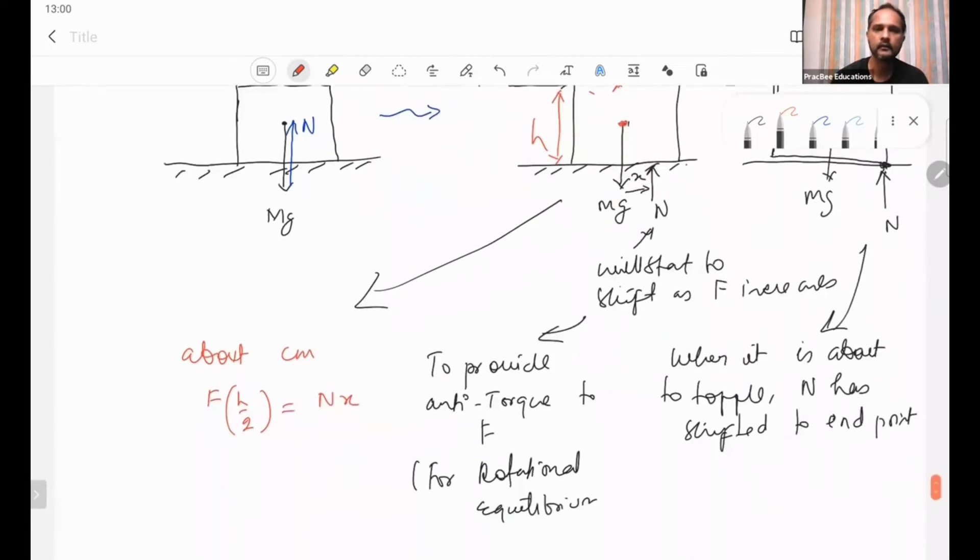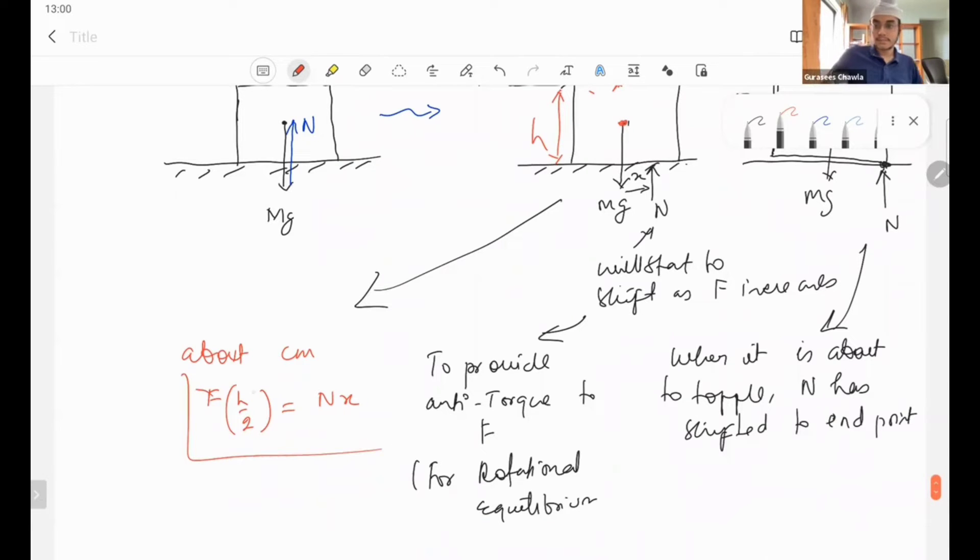So this can give me the location of x in normal reaction, right. Fine, or normal reaction value Mg because this is a translational equilibrium in the, I'm sorry, y direction. X or y, you got this.